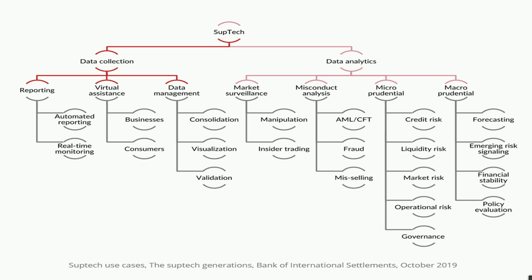Microprudential analysis covers credit risk, liquidity risk, market risk, operational risk, and governance risk. It is very important to categorize these risks and determine their criticality and severity. This course helps you understand everything from the regulated entity's side — their pain points and what they are trying to do.